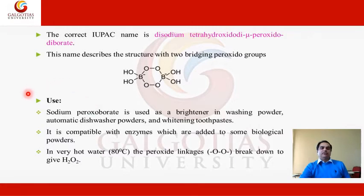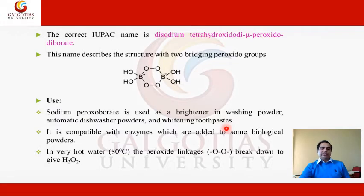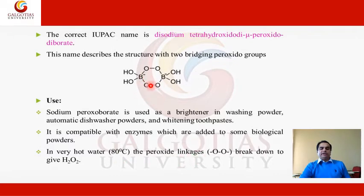Let us discuss the various uses of sodium peroxoborate in different areas. It can be utilized as a brightening agent in washing powders, automatic dishwasher powders, and whitening toothpastes for giving brighter performance. It is also compatible with the enzymes which are added to some biological washing powders. Another use is that when used in hot water at around 80 degrees centigrade, the peroxide linkages will break down to release H2O2 — when heating sodium peroxoborate, this linkage will break and convert into the form of the simplest peroxide, that is hydrogen peroxide molecule.